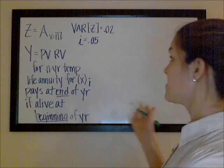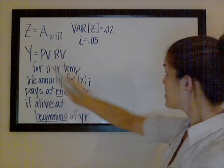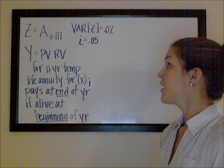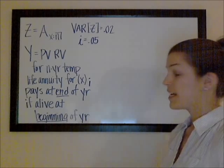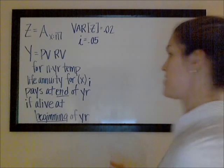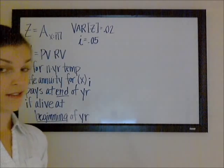They also give us that the variance of Z, or the variance of our N-year endowment insurance payable at the end of the year, is 0.02, and that our annual effective rate of interest is 5%. So, the first thing is to figure out what exactly is happening with this annuity.